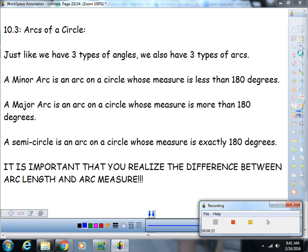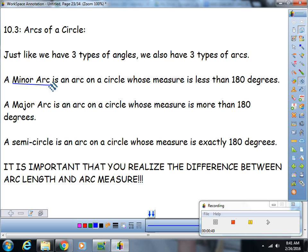So a minor arc is an arc whose measure is less than 180 degrees. A major arc is an arc whose measure is more than 180 degrees. And a semicircle is an arc on a circle whose measure is exactly 180 degrees.